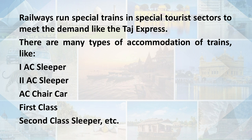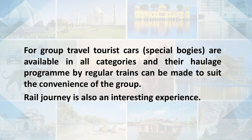There are many types of accommodation available in Indian trains like 1st AC, 2nd AC sleeper, 1st AC sleeper, AC chair car, 1st class, 2nd class sleeper, etc. For group travel, tourist cars — that is, special bogeys — are available in all categories and their haulage program by regular trains can be made to suit the convenience of the group. Rail journey is also an interesting experience.